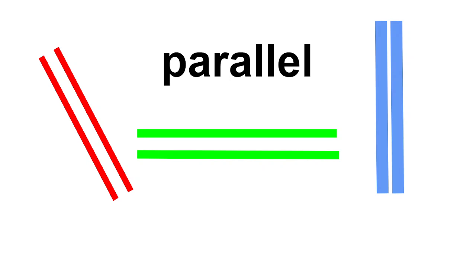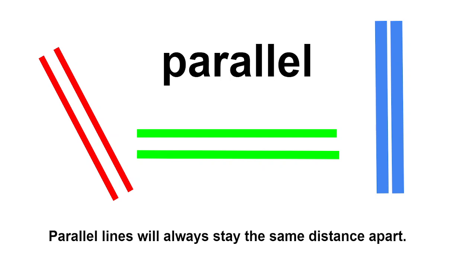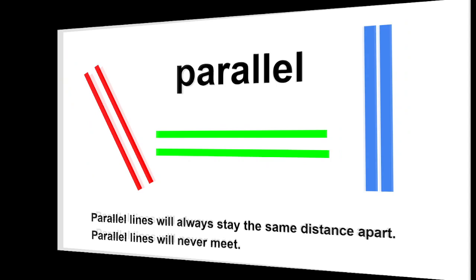We're going to look at some parallel lines. There is a pair of parallel lines — here's another one and another one. Parallel lines will always stay the same distance apart and parallel lines will never meet.